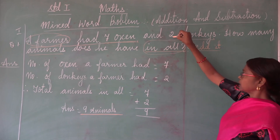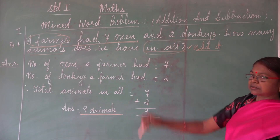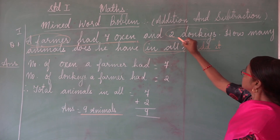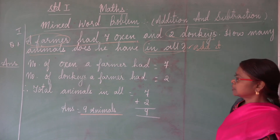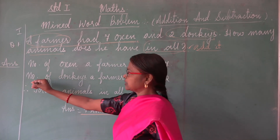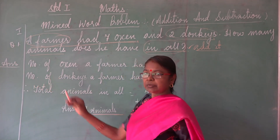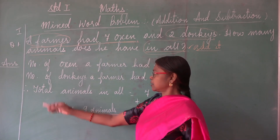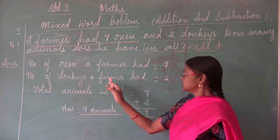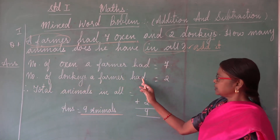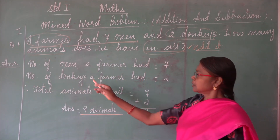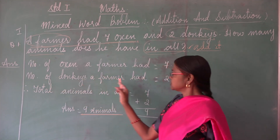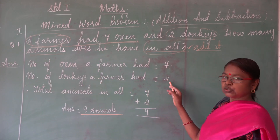Now the next thing we are talking about is the donkeys. So how many donkeys does he have? He has got two donkeys. So again we begin the sentence with 'Number of' — which means many, more than one. Number of donkeys a farmer had — who had? A farmer had. You need to write the full statement: is equal to two.